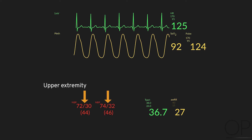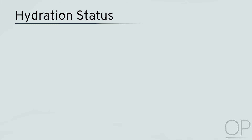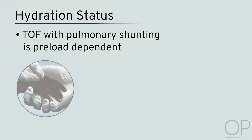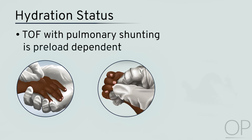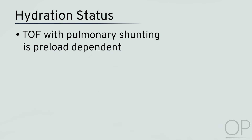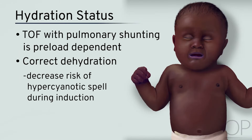A low diastolic pressure can be a result of significant runoff via the PDA. Blood pressure gradients between the upper and lower extremities, or pre- and post-ductal saturation differences, can indicate additional defects or problems. Preoperative assessment of the hydration status is extremely important. Tetralogy of Fallot with pulmonary shunting is a preload-dependent cardiac lesion, especially in the presence of a dynamic component. It is crucial to assess skin turgor, capillary refill, and the presence of a sunken fontanelle. Any obvious dehydration should be immediately corrected to decrease the risk of a hypercyanotic spell during induction.